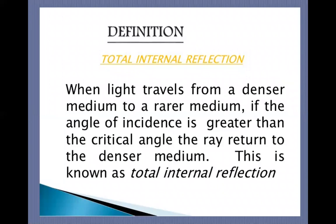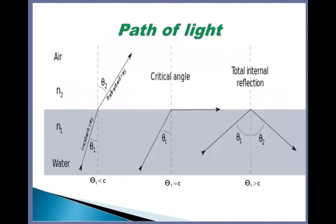What is total internal reflection? When a ray of light travels from a denser medium to a rarer medium, if the angle of incidence is greater than the critical angle, the ray returns to the denser medium. This is known as total internal reflection. You have to understand what the critical angle is, and remember that for TIR the light ray must travel from a denser medium to a rarer medium.